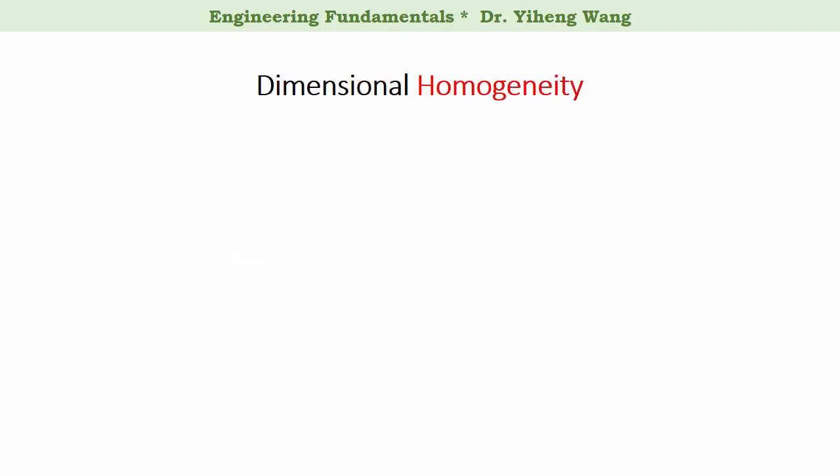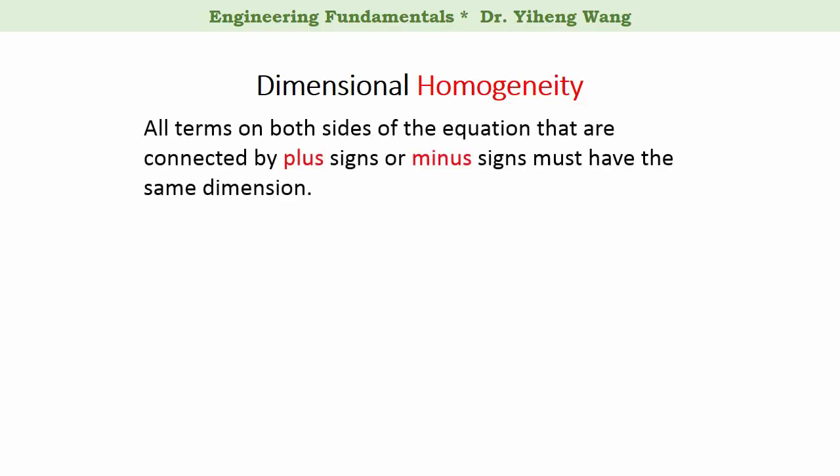During engineering calculation, there is a basic rule of dimensional homogeneity, which states that all terms on both sides of an equation that are connected either by plus signs or minus signs must have the same dimension. They should also have the same units, but that can be achieved through unit conversion and will not pose a fundamental issue.